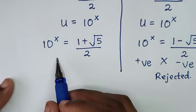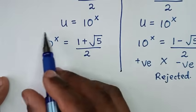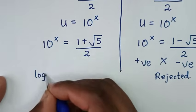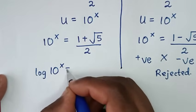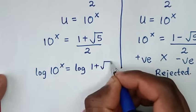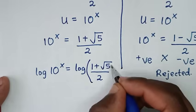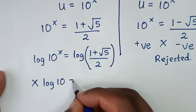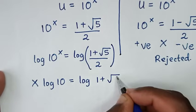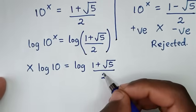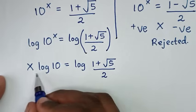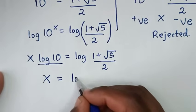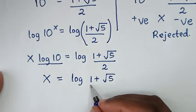Continuing with the first solution: 10 power of x equals 1 plus square root of 5 over 2, which is positive. To find x, we apply log to both sides: log of 10 power of x equals log of (1 plus square root of 5 over 2). The power x moves to the front: x times log 10 equals log of (1 plus square root of 5 over 2). Since log 10 equals 1, we get x equals log of (1 plus square root of 5 over 2).